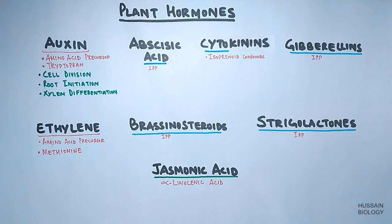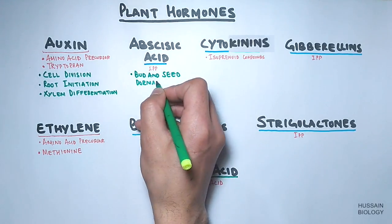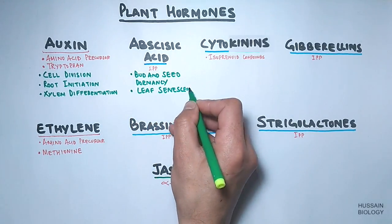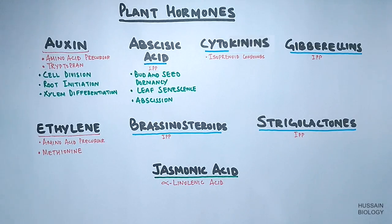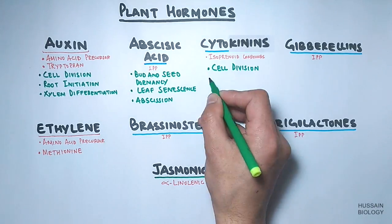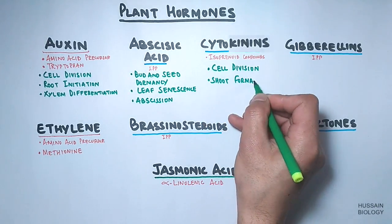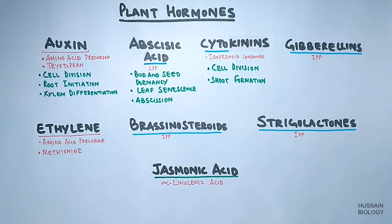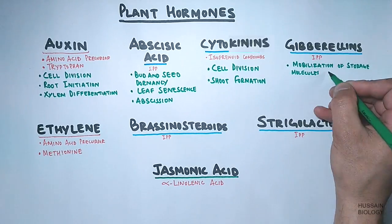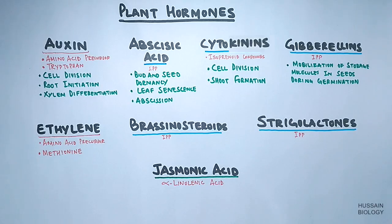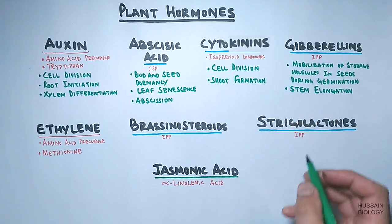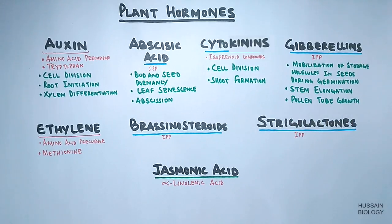Abscisic acid causes bud and seed dormancy, leaf synthesis, and abscission. Cytokinin hormone regulates cell division and shoot formation in the plant. Gibberellins play a role in storage molecule mobilization during seed germination, and also regulate stem elongation and pollen tube growth during pollination.